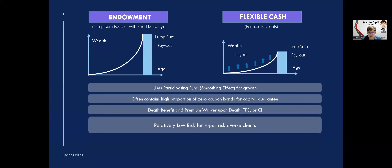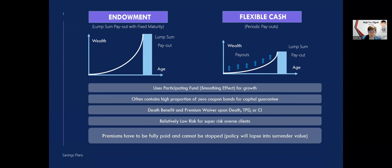The fourth point is that generally these plans are relatively low risk. There are guaranteed returns and also non-guaranteed returns, but non-guaranteed returns usually will be achieved, because right now the benchmark is 4.25% and it is pretty hard for any insurer to miss that target. So ultimately these savings plans are still considered very, very low risk. And of course, the last point is that premiums have to be fully paid — the moment you stop, the policy will lapse and it will pay out your surrender value. So do take note that it is really a forced discipline savings that you cannot stop at will.